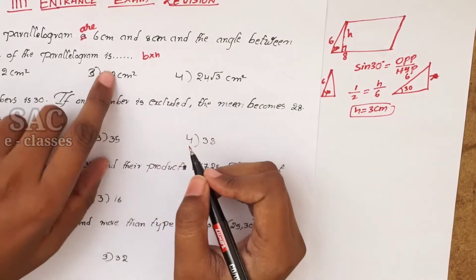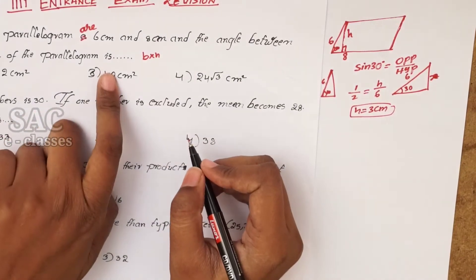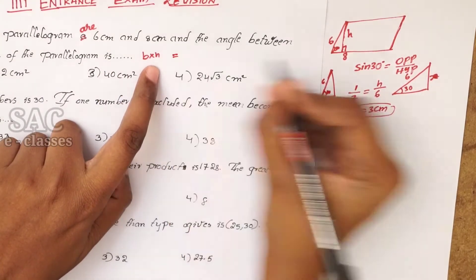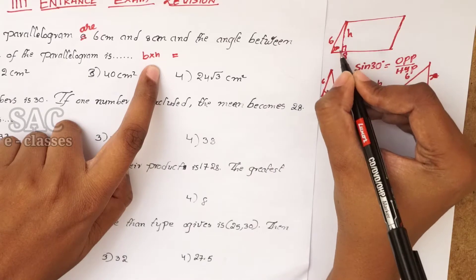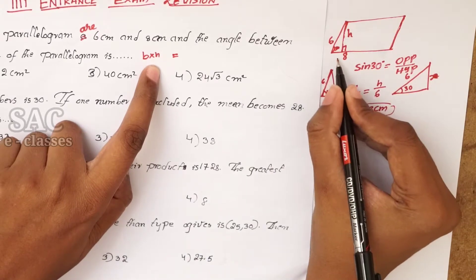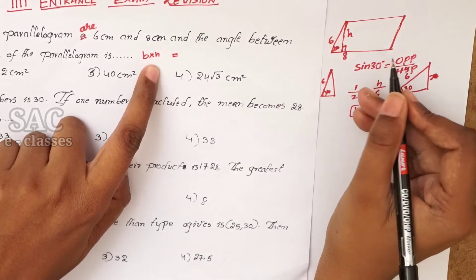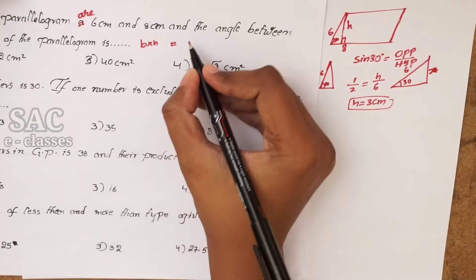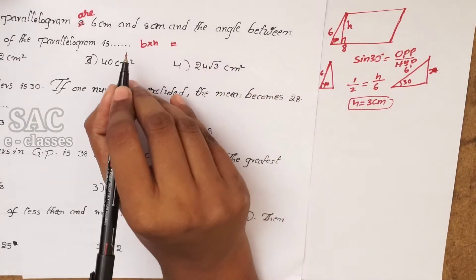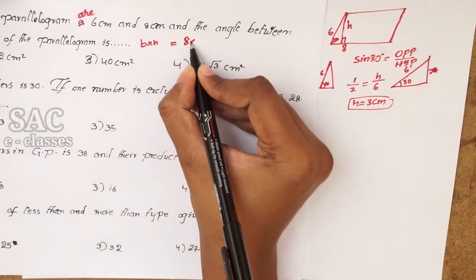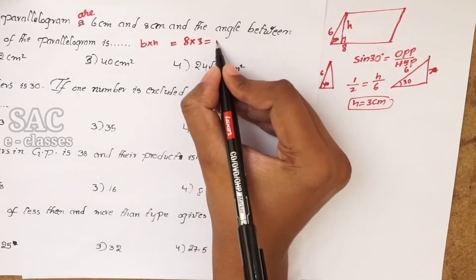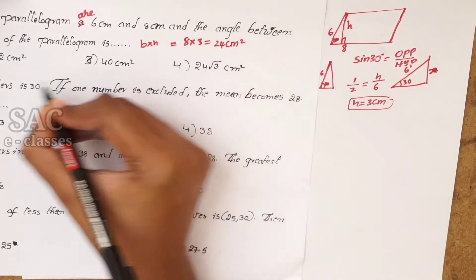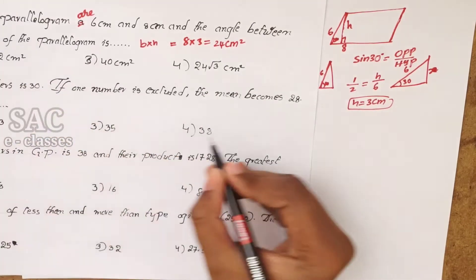The area of the parallelogram is base into height. The base is 8 cm and the height is 3 cm. So area = 8 × 3 = 24 cm². Then option 1 is correct.